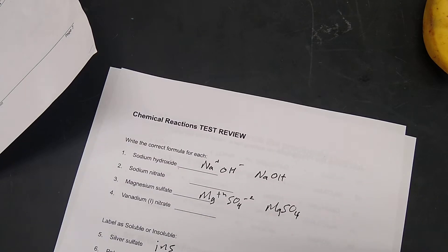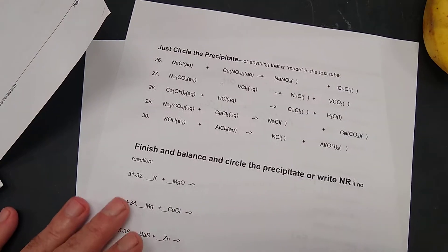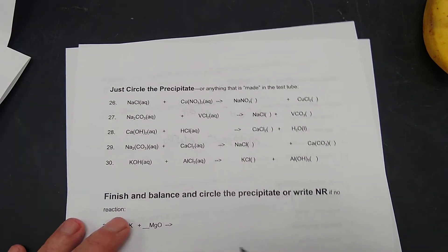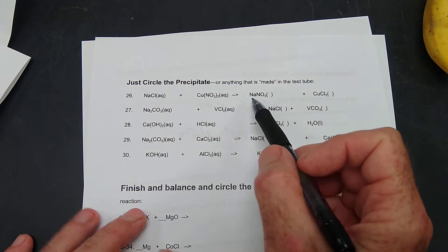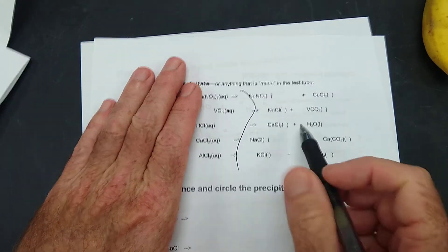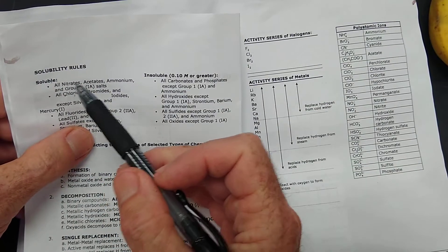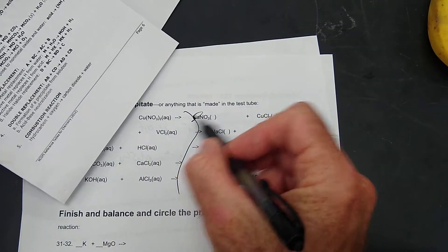How about just circle the precipitate. This one didn't even ask you to balance. Let's see. Here's our products over here on this side. Sodium nitrate. Look that up. All nitrates are soluble, so that's not a precipitate.